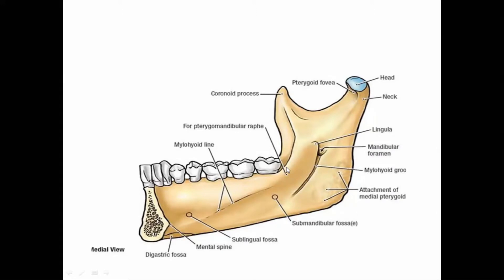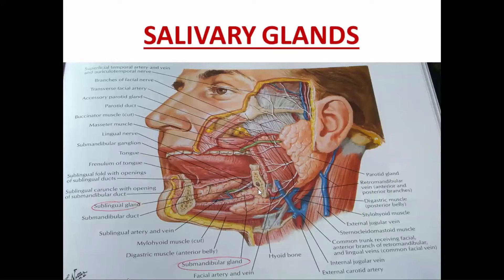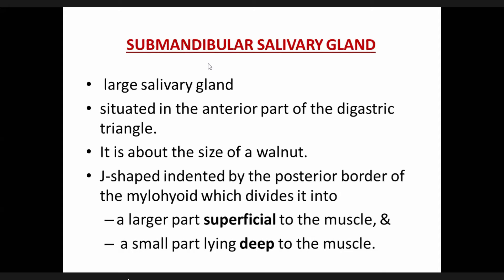The submandibular gland is the large salivary gland — the largest is the parotid gland, and the larger salivary gland is the submandibular gland. It is present in the submandibular fossa, in the anterior part of the digastric triangle. The shape of the submandibular gland is walnut shape, and its size is about 10 to 20 grams.